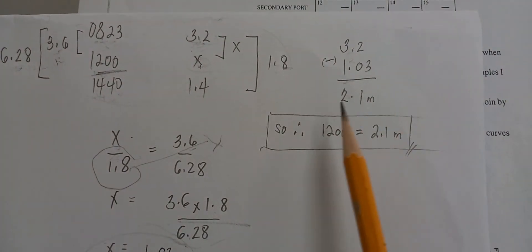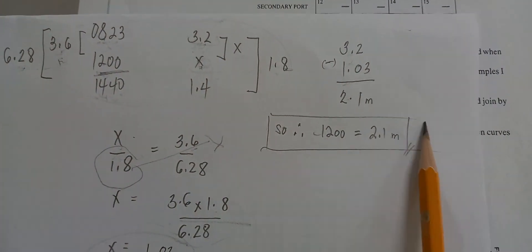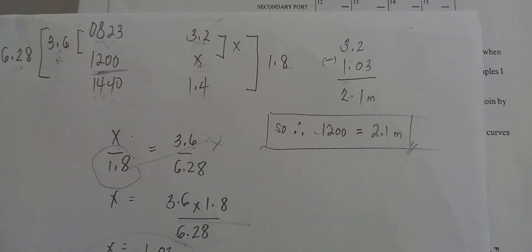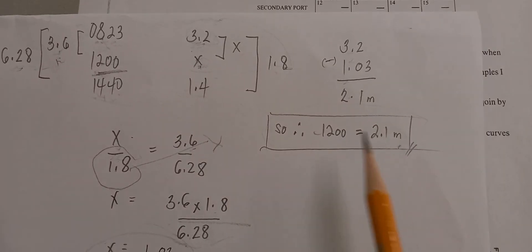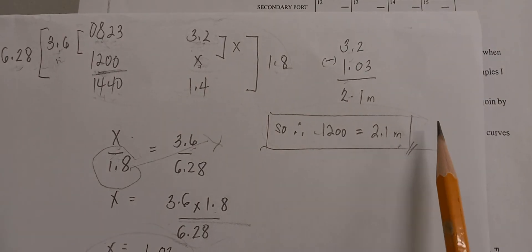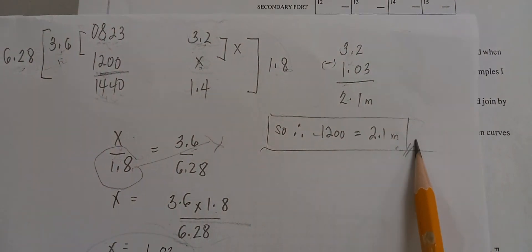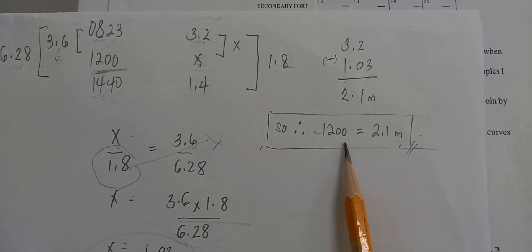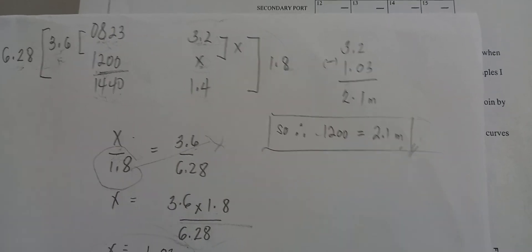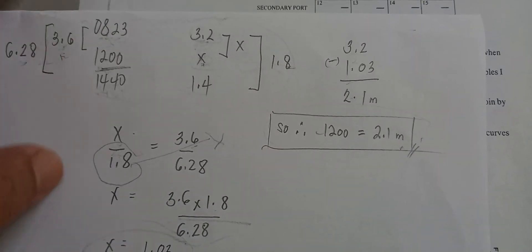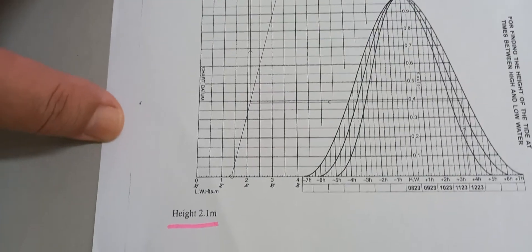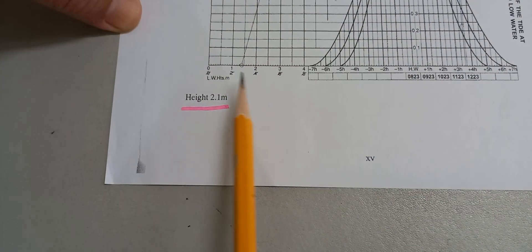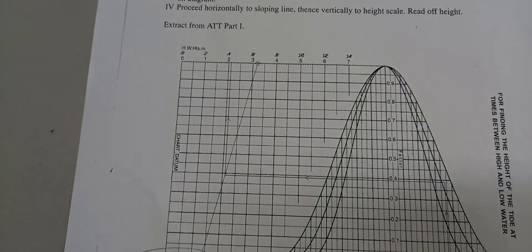Therefore, the height of tide at 1200 is 2.1 meters. So there you have it. Thank you.